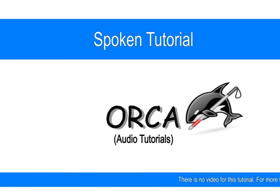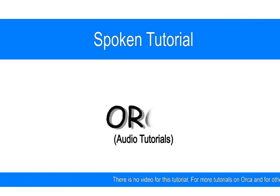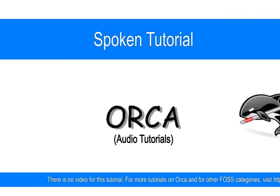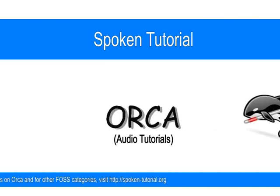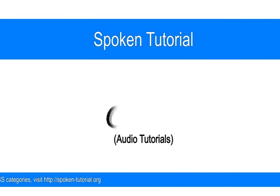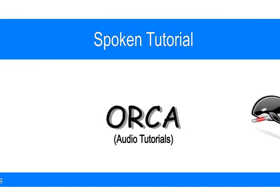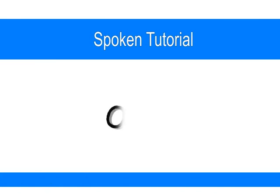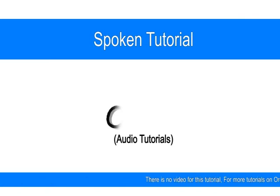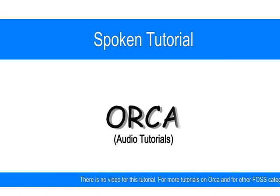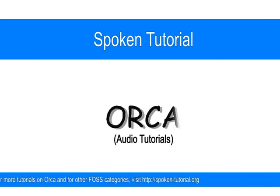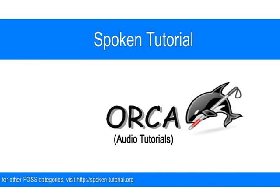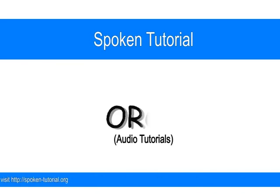Now let's start Orca itself. I will press Alt plus F2 and enter Orca. So here we go — Alt plus F2, then O, R, C, A, Enter. We can hear Orca announce: Welcome to Orca screen reader slash magnifier. As we can hear, Orca has started. It's running and we can start using it.